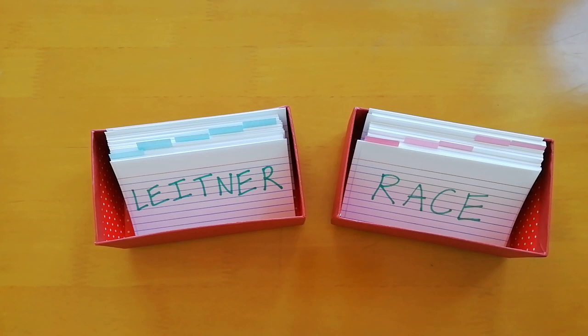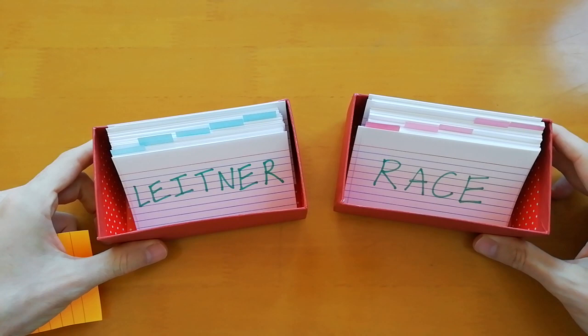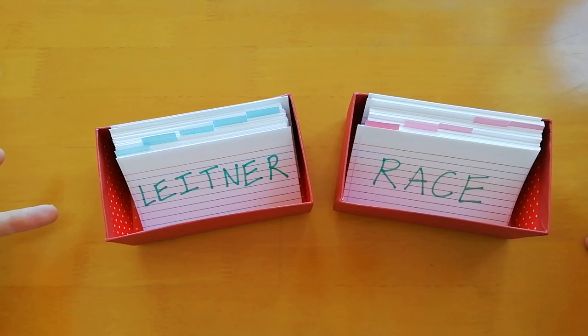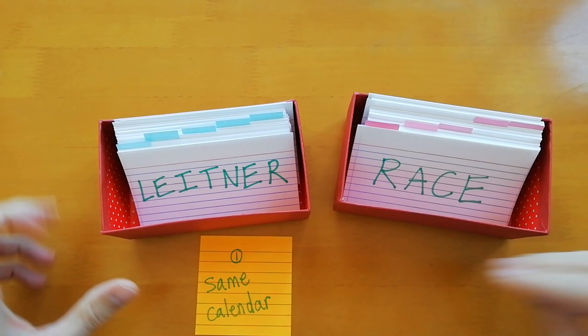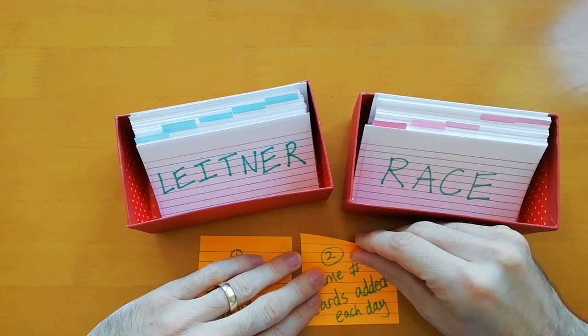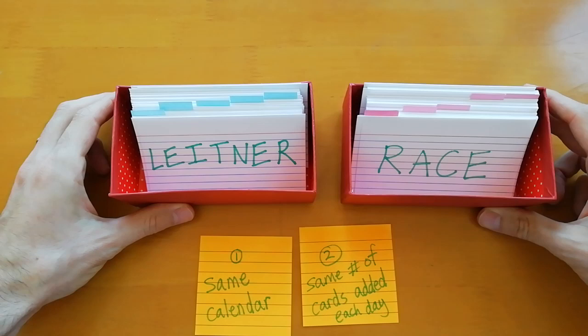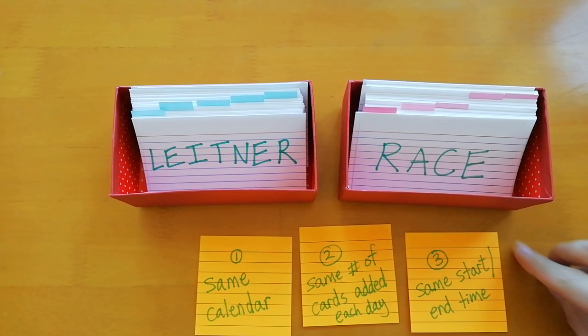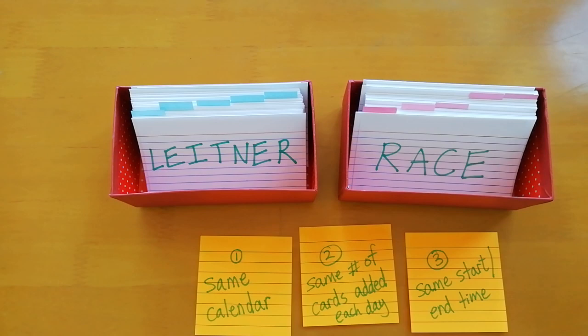Let's jump into this. Let's assume that you and your friends both have the Leitner Box and have your flashcards prepared but haven't started to use the box yet, because you're going to start with an empty box. You're both going to use, first of all, the same calendar — there are many different types of calendars people use for the Leitner Box system, so just make sure you're using the same one. These are three key rules to follow before we even get started.